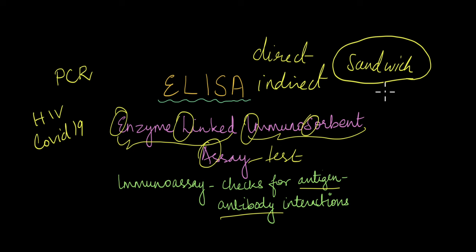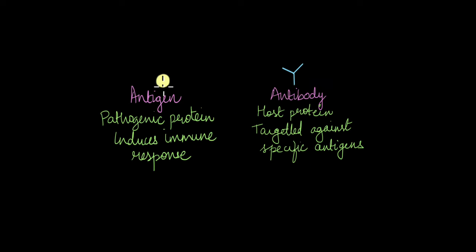Before we talk about what this sandwich ELISA is, let's familiarize ourselves with some concepts related to immunology. We're going to be talking about these terms frequently in the video: antigens and antibodies. Antigens are nothing but pathogenic proteins that induce the immune response in hosts. So if it's a pathogen like a bacteria, it's going to have a protein on its surface that is going to induce the immune response in the host, and that is called the antigen.